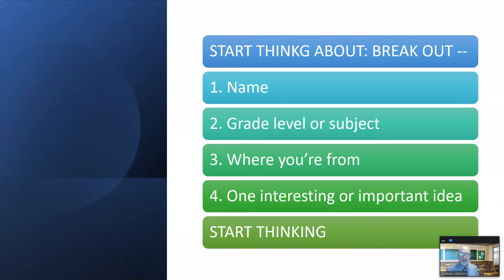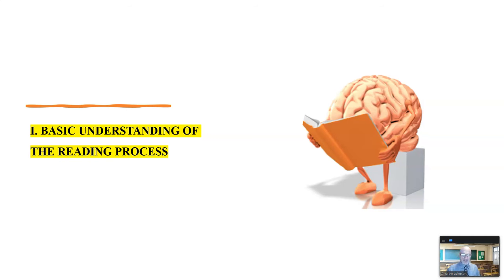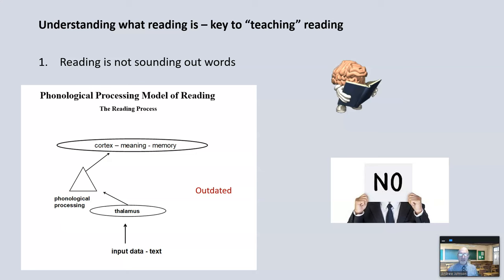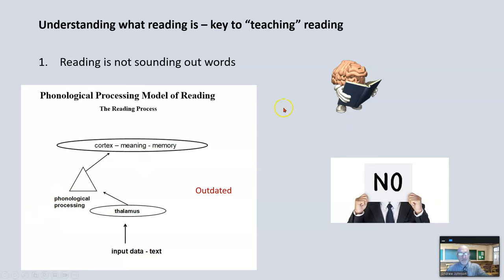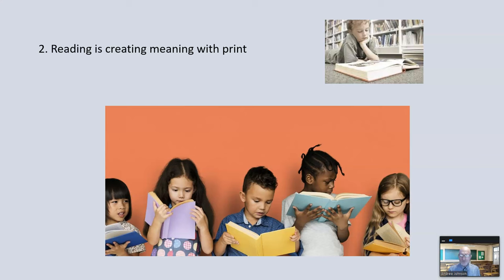Part one: understanding the basic process of creating meaning with print. This is key to designing effective instruction and interactions for reading. Know that reading is not sounding out words. This is the simple view of reading — that reading simply goes from the page up to your thalamus, you process it, and then it goes up to the cortex. This one-way process is an outdated view. Reading is not sounding out words; it's creating meaning. Without meaning, you are not reading.